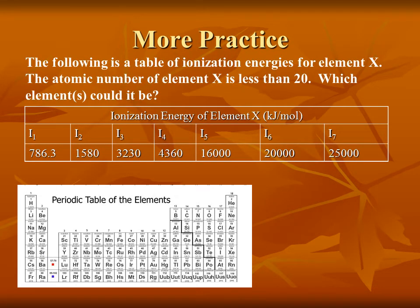Here's a puzzle: the following is a table of ionization energies for element X, whose atomic number is less than 20. Which element or elements could it be? Try to integrate all the information given to identify the element. This kind of problem is fairly common on exams — using ionization energies to identify an element.